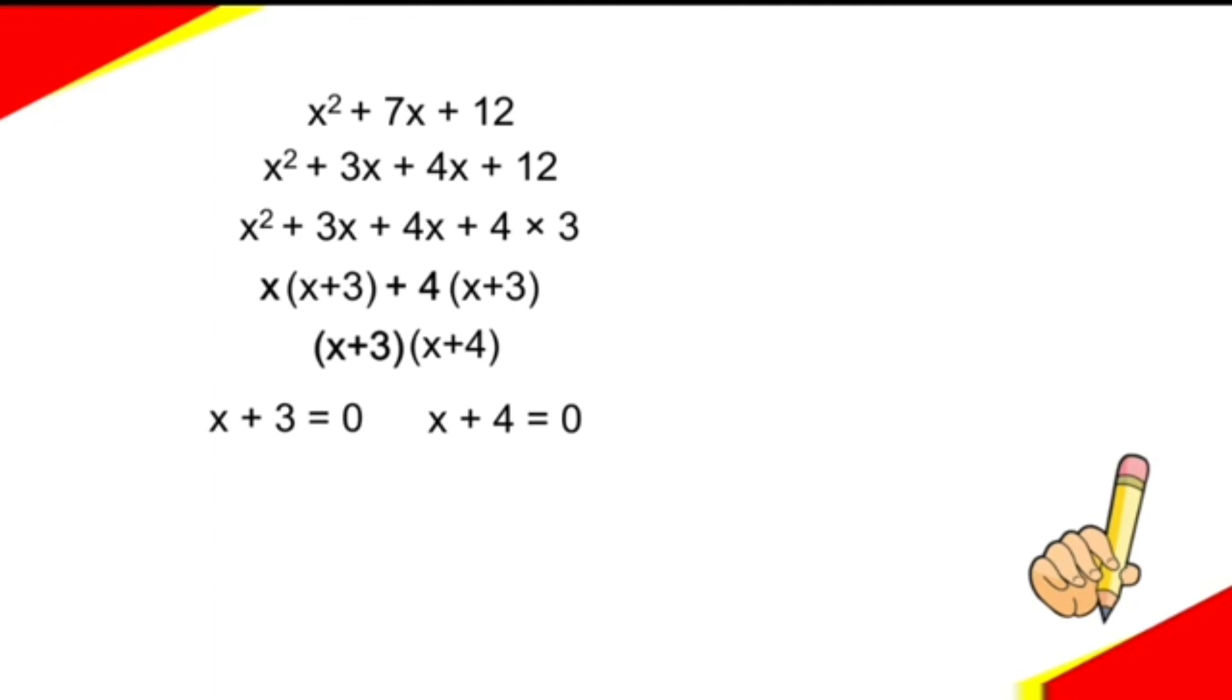Now, what are the values of x? The values of x are -3 and -4. Therefore, the zeros of x² + 7x + 12 are -3 and -4.